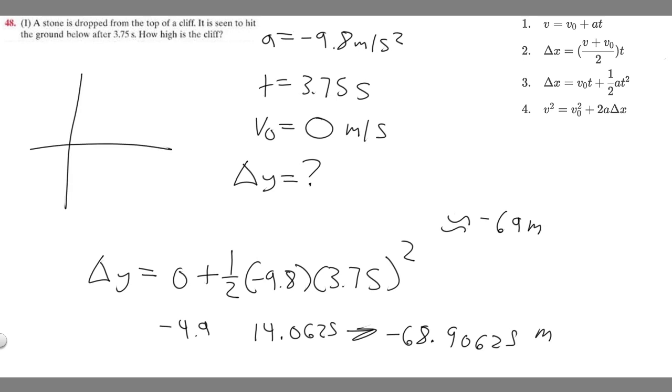So how high is the cliff? Well, this is minus, right? So if you think about it, it's going negative. It falls down minus 69 meters, so if it falls down that much, the height of the cliff is going to be 69 meters. If you ever get a negative, it's going to be positive, because we know in the real world distance can't be negative. So the answer is going to be 69 meters.